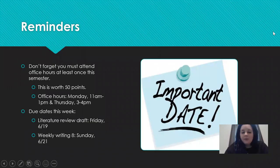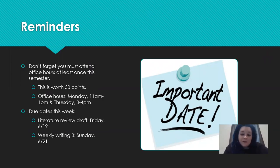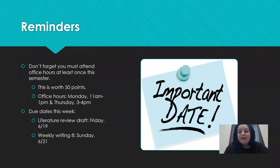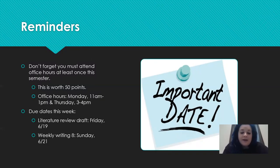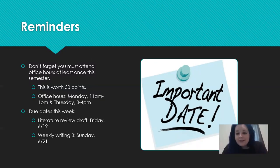Here are some reminders. Don't forget to please come to office hours at least once this semester. It's worth 50 points, so it's really easy to help boost your grade or to also really harm your grade. We can talk about anything you like — your draft, an assignment you don't understand, any readings, the state of the world right now. Whatever will be most helpful for you. I just want to have that one-on-one time to check in with all of you and make sure that you're doing okay in this course.